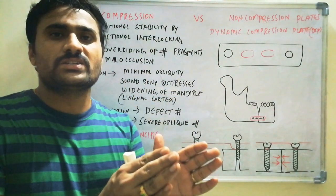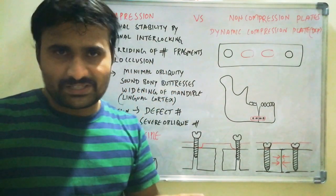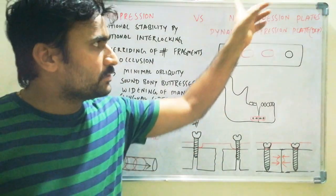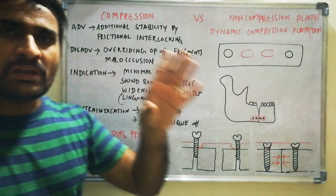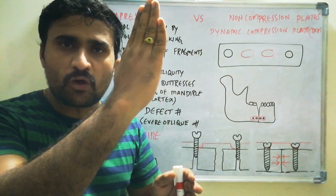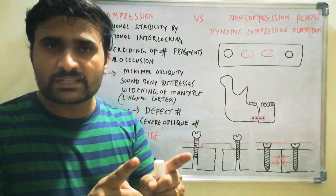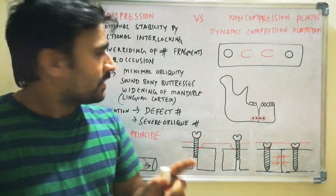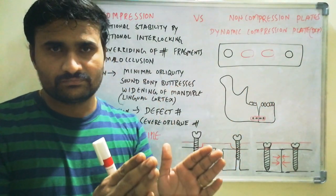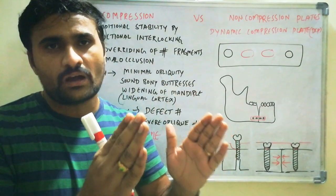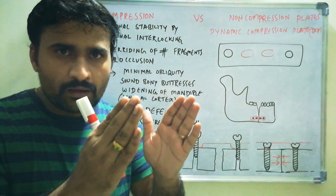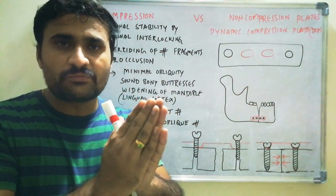Regarding indications, there are specific cases where you have to use compression plates. Generally, compression plates are not routinely used — we routinely use non-compression plates. Compression plates are indicated when there is minimal obliquity, meaning the fracture should be minimally oblique and somewhat straighter. Another indication is sound bony buttresses — if there is a defect fracture with too much gap between fragments, or bone loss, you cannot use compression plates. There must be sound bony buttresses to provide frictional interlocking.